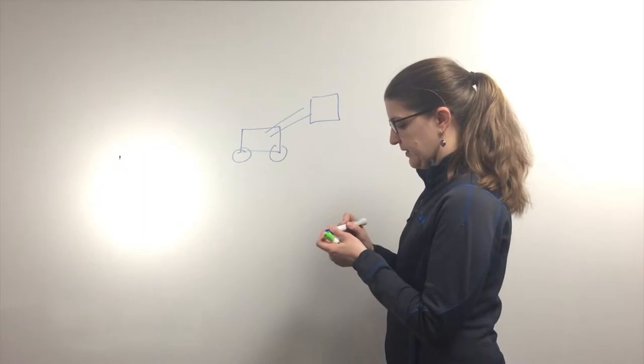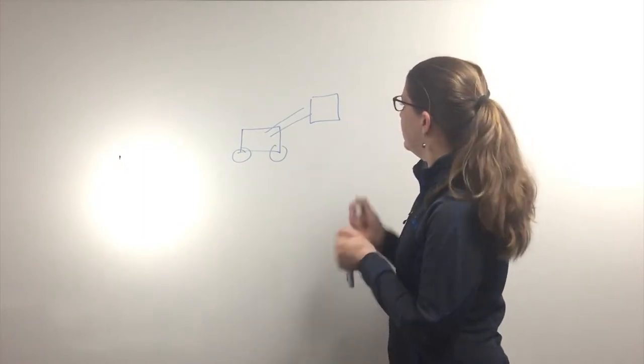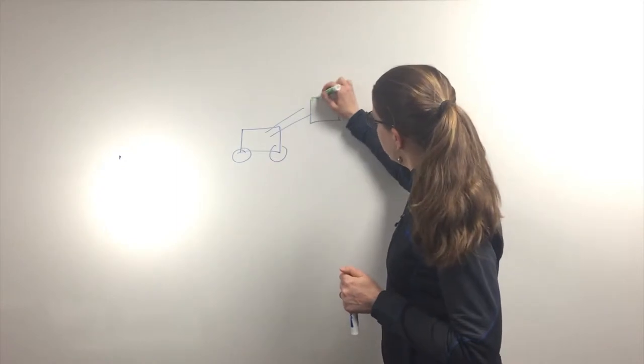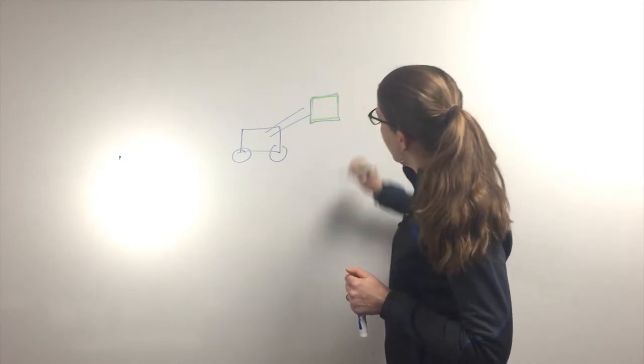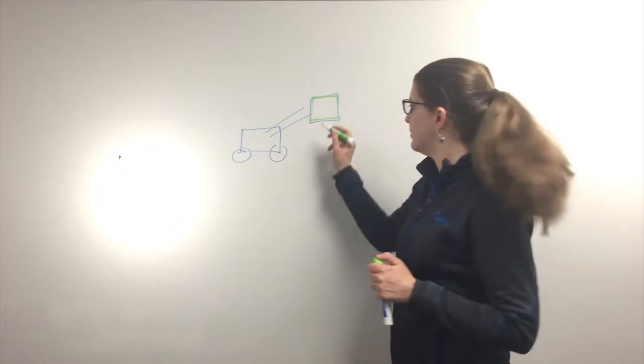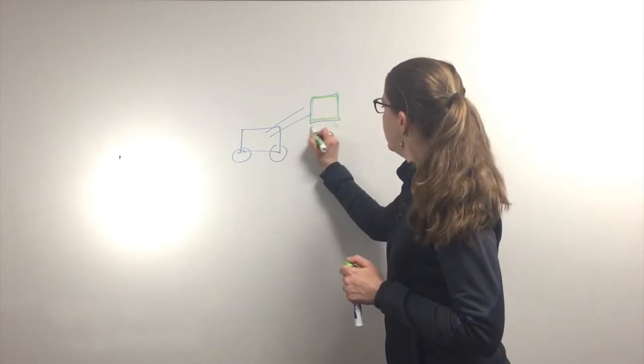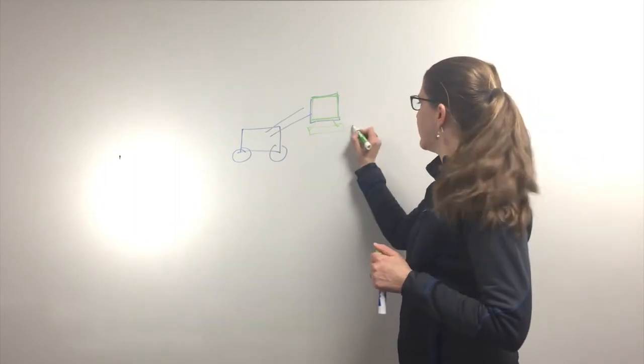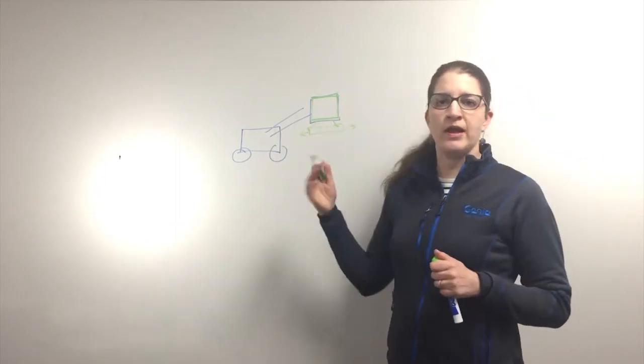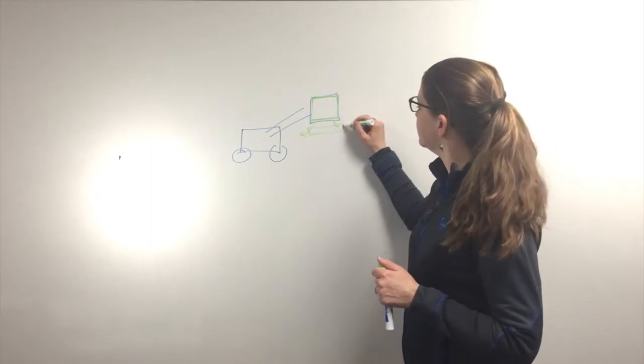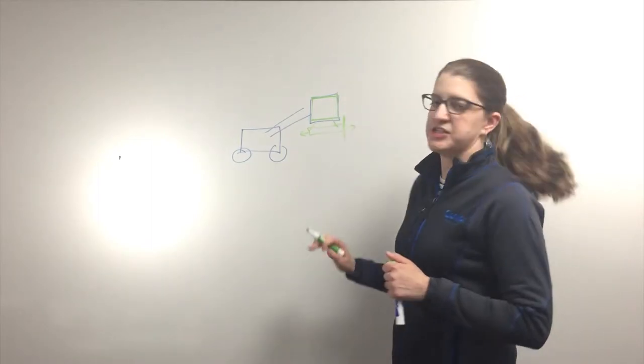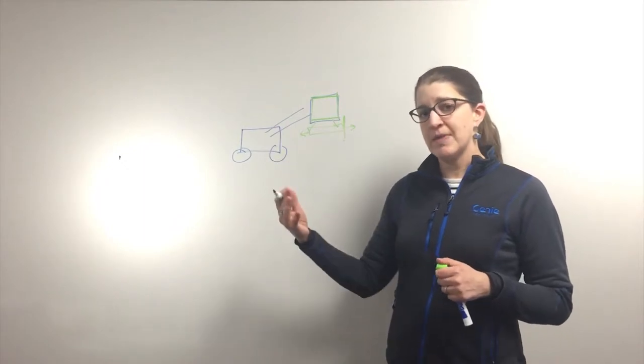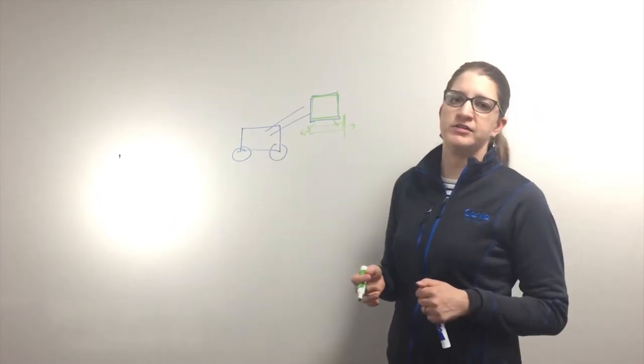This is our boom platform. We fit high visibility foam padding around the rails of the platform. And underneath the platform we have a floating proximity sensor. So there's a frame that hangs under the platform. It can move slightly from side to side. And when this frame comes in contact with a fixed object, it's going to immediately cut out motion. So that will protect the equipment around the boom lift from incidental contact.